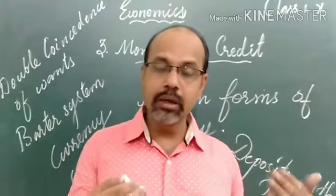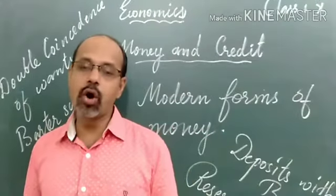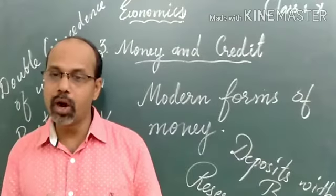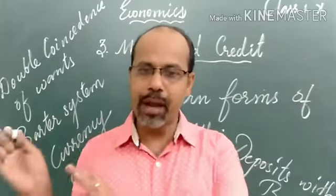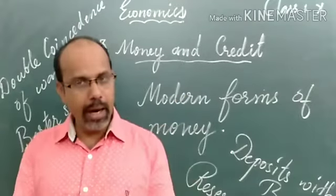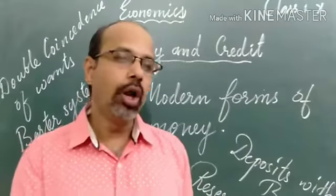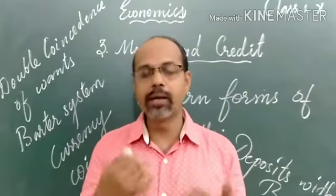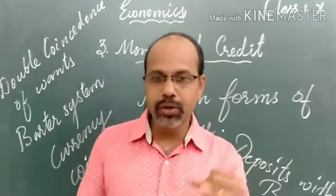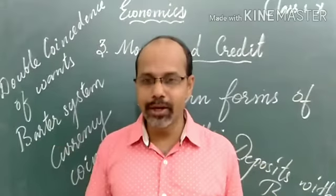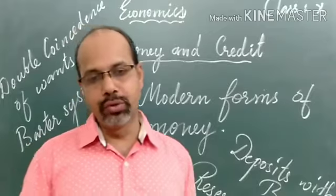Large circulation of coins existed, especially gold coins and silver coins, during the period of the rulers in our country. The modern forms of currency include what we call paper currencies or notes, as well as coins. We use currency notes and coins nowadays.